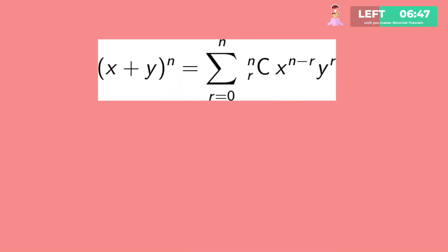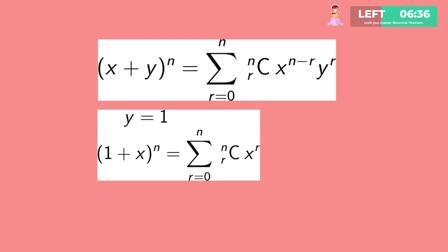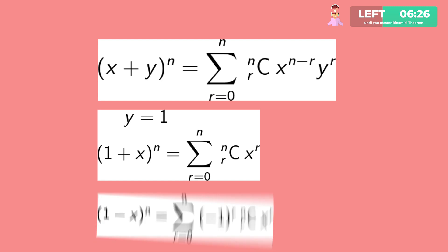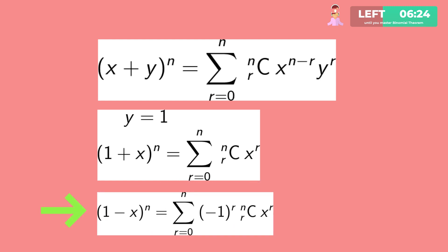Standard expansions: (x plus y) to the power n can be written as summation r equals 0 to n of nCr x to the power (n minus r) y to the power r. Putting y equals 1 gives (1 plus x) to the power n as summation of nCr x to the power r. Substituting x with minus x gives (1 minus x) to the power n as summation of (minus 1) to the power r times nCr x to the power r.